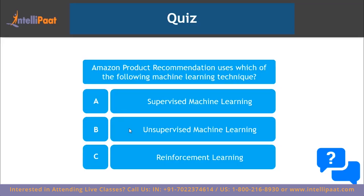Now let's head to a quick quiz. The first question: Amazon product recommendation uses which of the following machine learning techniques — supervised learning, unsupervised learning, or reinforcement learning? Put your answer in the comment box below.